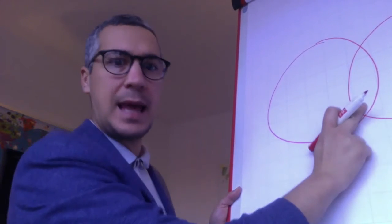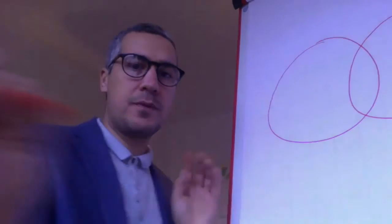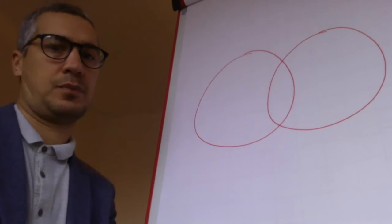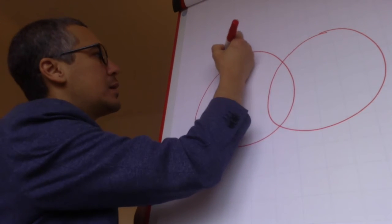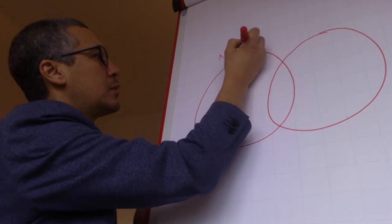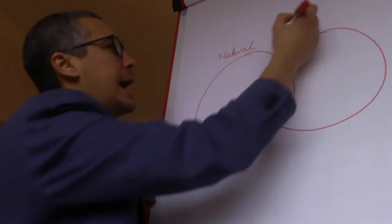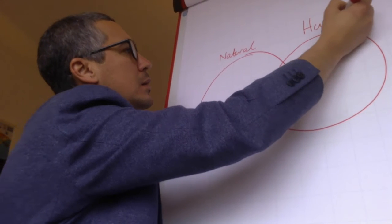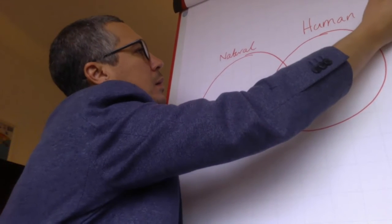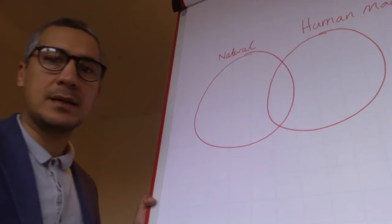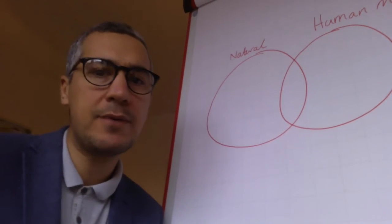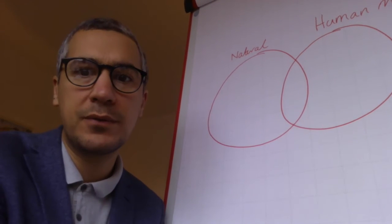They overlap in the middle. So this one we will call natural, and this one human made. What I want you to do is create a Venn diagram for me with different light sources in there.